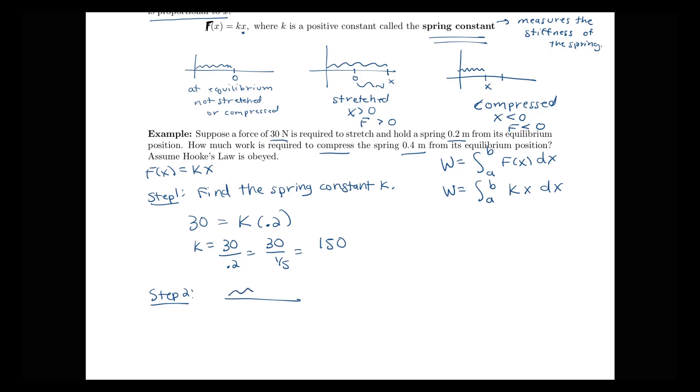I have my spring that was going to go from being at equilibrium position from 0 to being compressed 0.4 meters from that equilibrium position. So I'm going to a position of negative 0.4 here. So it's going from 0 to negative 0.4. So we're going to have that the work done here is this integral from 0 to negative 0.4 of 150x dx.